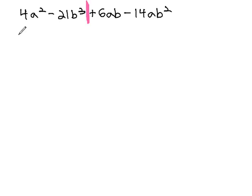We will then look at the left side and see what the greatest common factor is. Huh, 4a squared and negative 21b cubed have nothing in common. Let's just factor out a 1, leaving 4a squared minus 21b cubed.